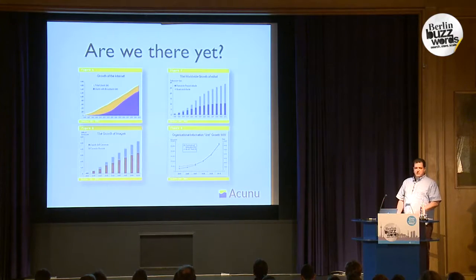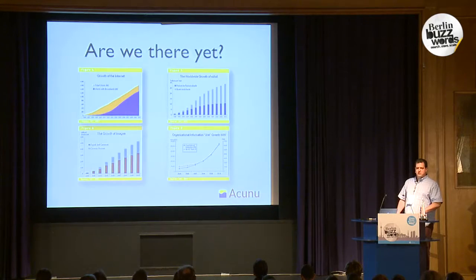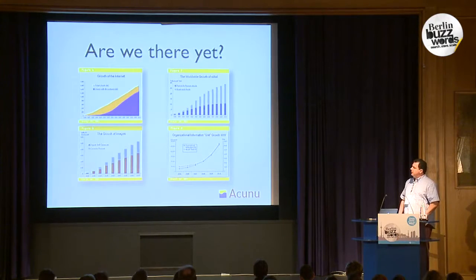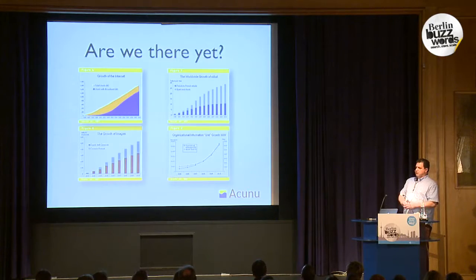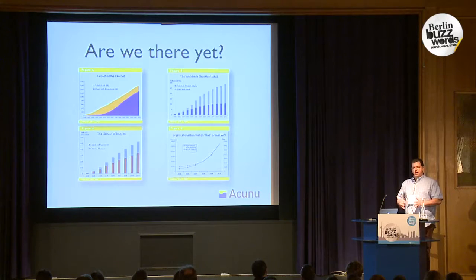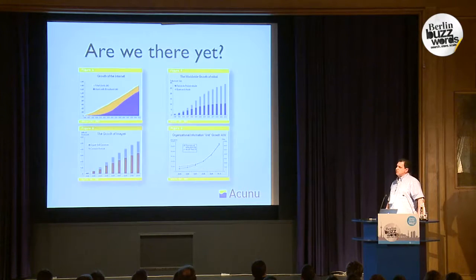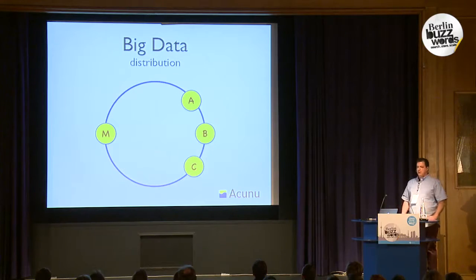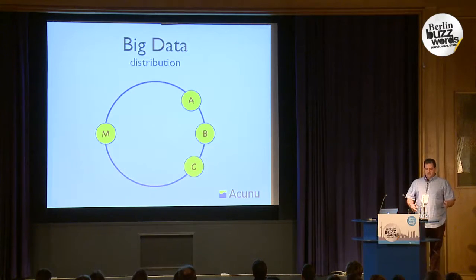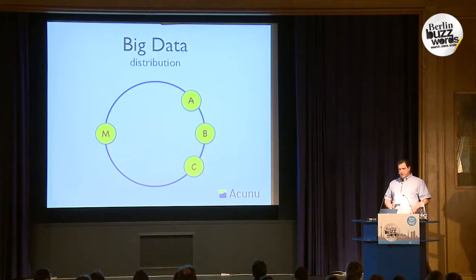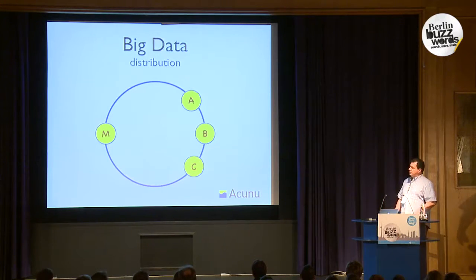The now infamous IDC report cited something like 161 exabytes for the year 2006, where an exabyte is 1,024 petabytes — and a petabyte still seems unimaginably big to some people. That is projected to grow to eight zettabytes by the year 2015. Just an explosive amount of growth in ten years, which is really a pretty short period of time. This has caused us to make some very fundamental changes in how we store large data sets.